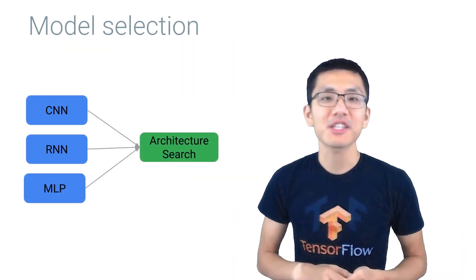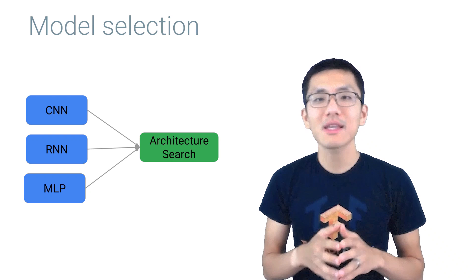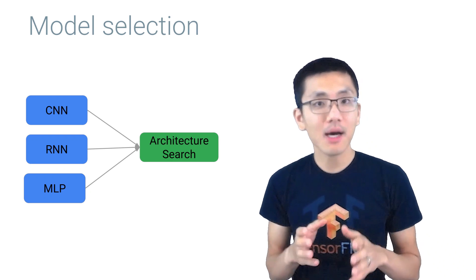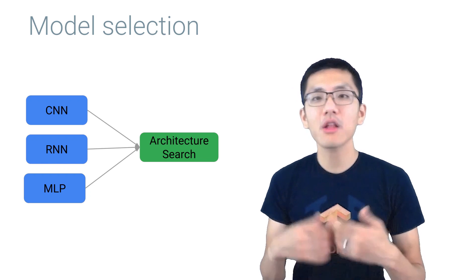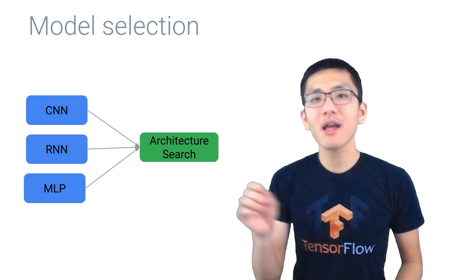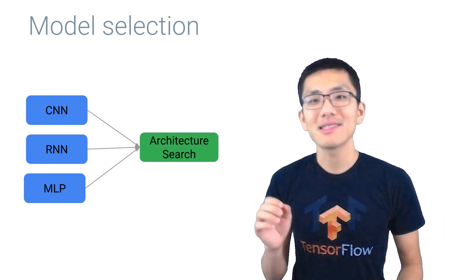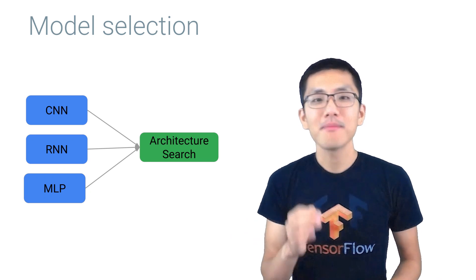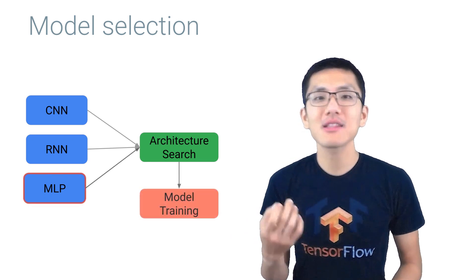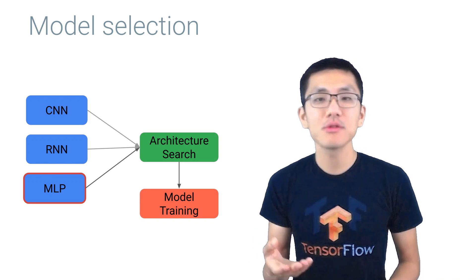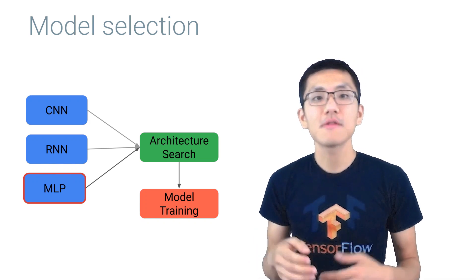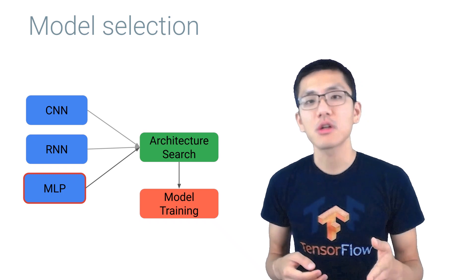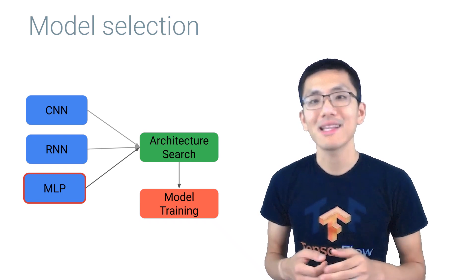Next up is model selection. While the model to use for a given dataset and task may seem obvious to a human data scientist, building a computer system to automate this process for a variety of different data types is not quite so simple. Model selection not only includes finding the general type of model to use, but it can also include doing neural architecture search to find the specific structure most suitable for a given data task.